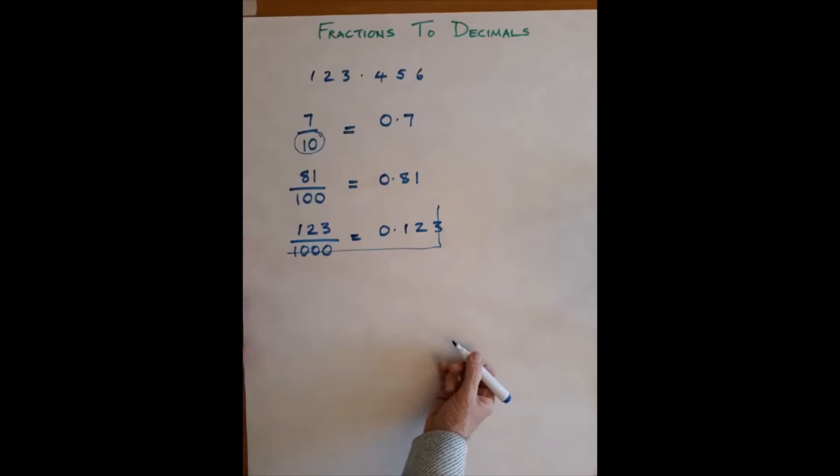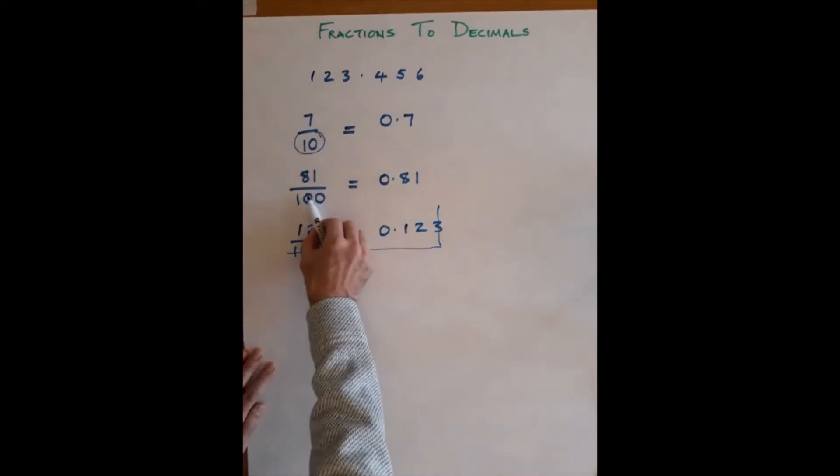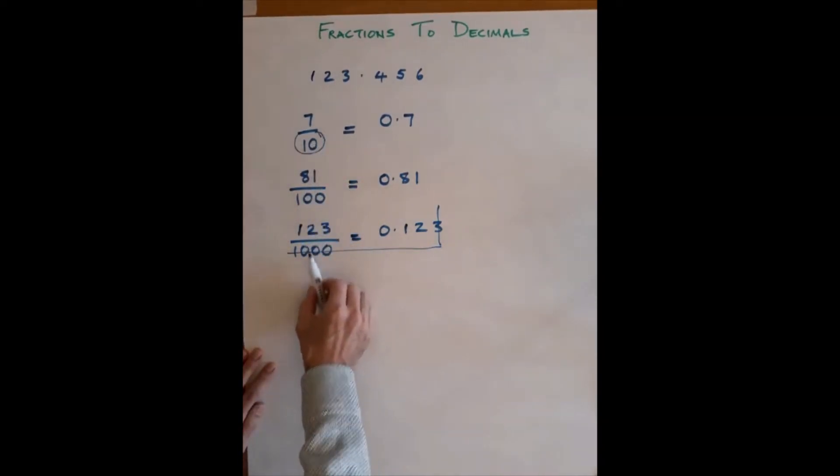Okay, so that's a starting point. Once in a blue moon you may get a very simple straightforward question that has a 10 or a 100 or a 1000 or something similar on the bottom. They're the easiest ones we're going to get.